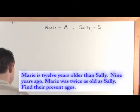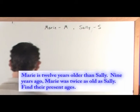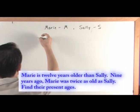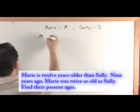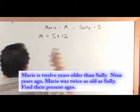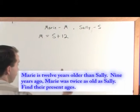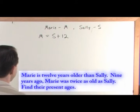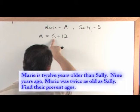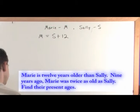Now let's begin to translate this word problem into equations. "Marie is 12 years older than Sally" means Marie equals Sally plus 12, or M = S + 12. Make sure you agree with that. You take Sally's age, add 12 years to it, and that's Marie's age. That's the translation of the first sentence.